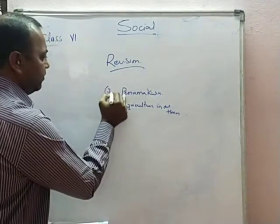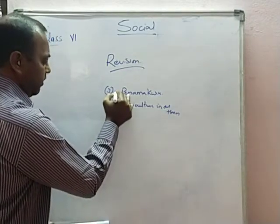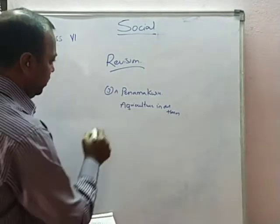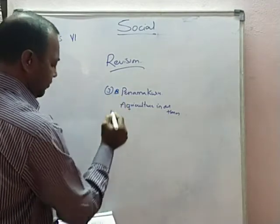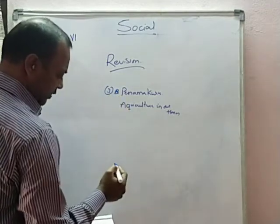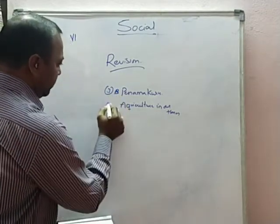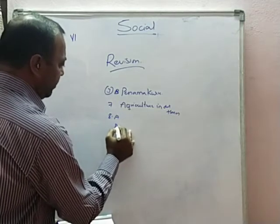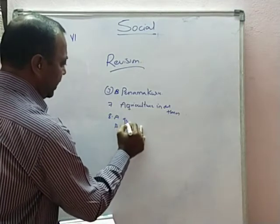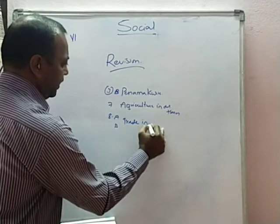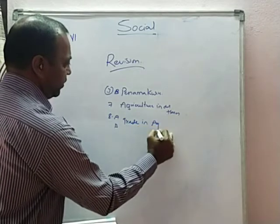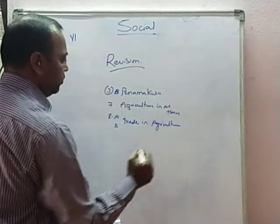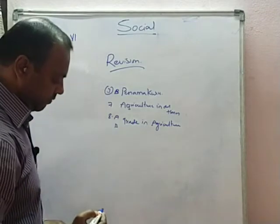Agriculture in Our Times is lesson 3B. And the seventh lesson, Agriculture in Our Times, is removed. The eighth lesson has parts A and B — Trade in Agricultural Produce is also removed. You need not read anything from that.